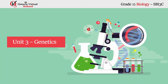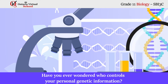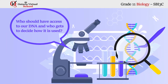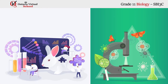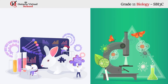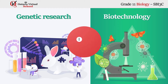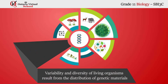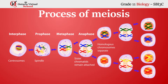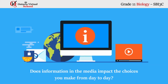Unit 3: Genetics. Have you ever wondered who controls your personal genetic information, who should have access to our DNA, and who gets to decide how it is used? In this unit we will discuss the social, environmental, and ethical implications of genetic research and biotechnology. You will also learn that the variability and diversity of living organisms result from the distribution of genetic materials during the process of meiosis.